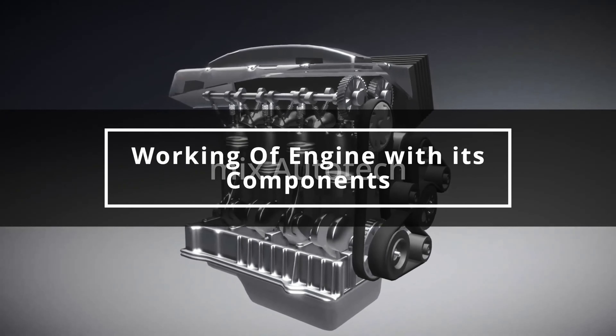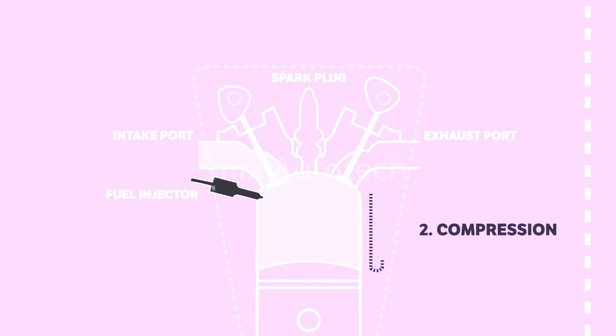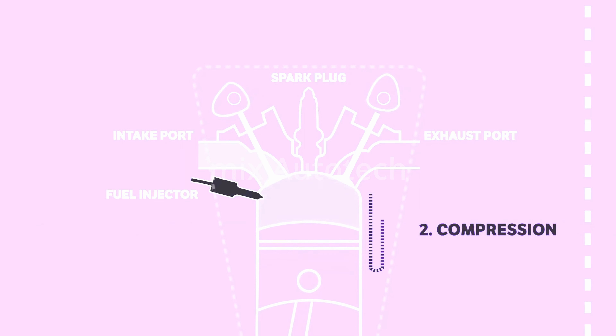The combustion process has four strokes. First, the intake stroke: the intake valve opens as the piston moves down, allowing a mixture of air and fuel to enter the combustion chamber. Second, the compression stroke: the piston moves up, compressing the air-fuel mixture, raising its pressure and temperature.